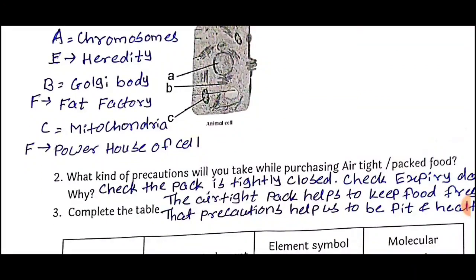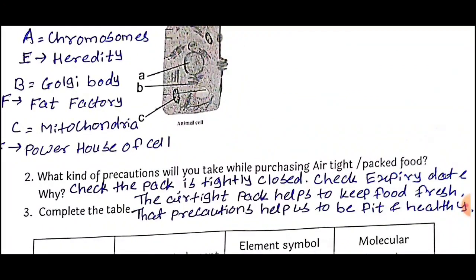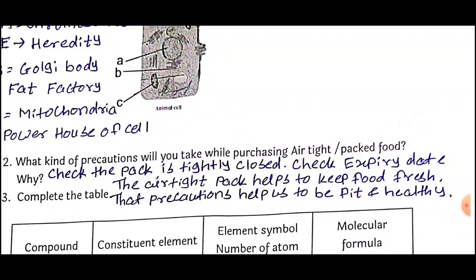Question Number 2: What kind of precautions will you take while purchasing airtight or packaged food and why? Answer: Check that the pack is tightly closed. Check the expiry date of the package. The sealed pack helps to keep food fresh. These precautions help us to be fit and healthy.